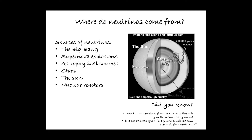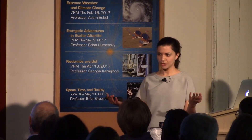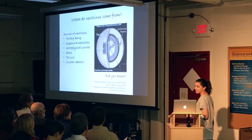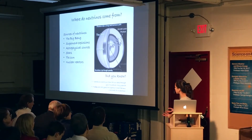Nuclear reactors are actually kind of like very, very mini versions of the Sun — they produce a lot of neutrinos. And we can study neutrinos from nuclear reactors to understand more about fuel composition and fuel burn-up. So neutrino detectors can actually be used for nuclear reactor monitoring.